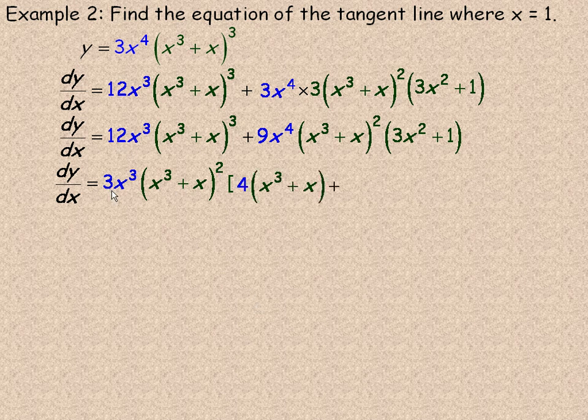Now when I factor 3x cubed out of 12x cubed, I get 4. And if I'm factoring x cubed plus x squared out of x cubed plus x cubed, there's still one of these left. If I factor two of them out, there were three. Now there's still one that's multiplied by that 4.